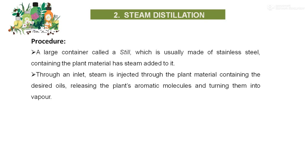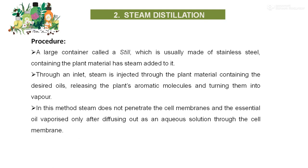Through an inlet, steam is injected through the plant material containing the desired oil, releasing the plant's aromatic molecules and turning them into vapor. In this method, the steam does not penetrate the cell membrane, and the essential oil vaporizes only after diffusion out as an aqueous solution through the cell membrane.